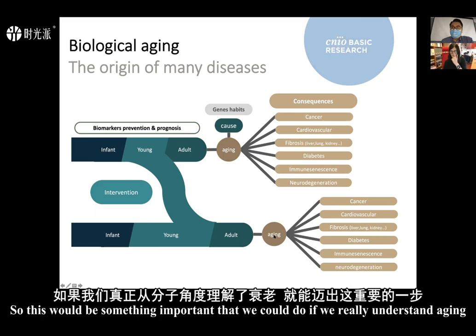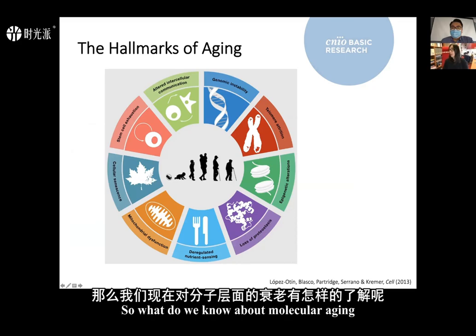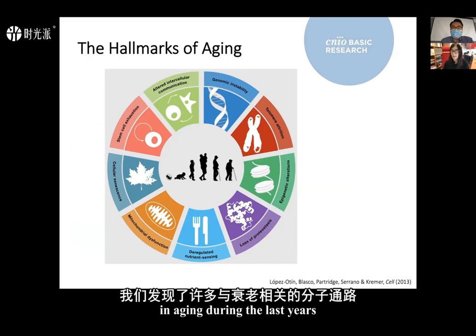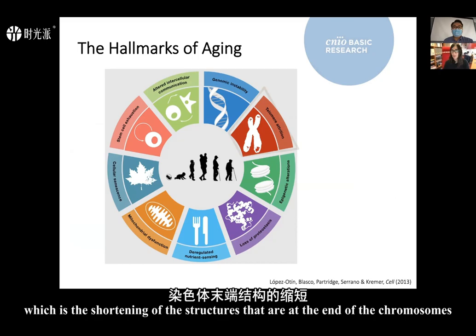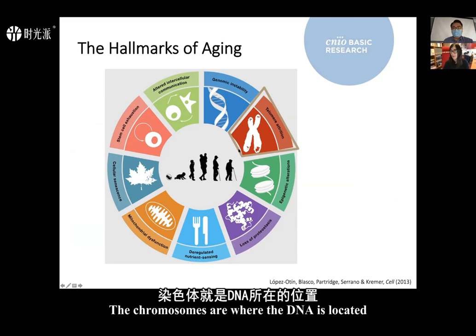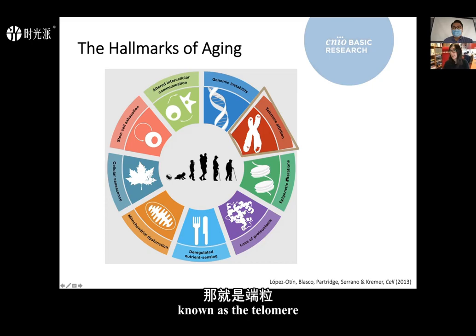So what do we know about molecular aging? There are many molecular pathways involved in aging, and I will be talking about one of them: the shortening of the structures at the end of the chromosomes. The chromosomes are where the DNA is located, and at the end of the chromosomes there is a very important structure known as the telomere, which is important to protect our chromosomes and our DNA.